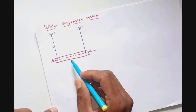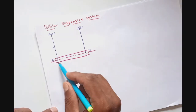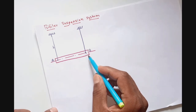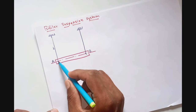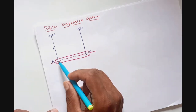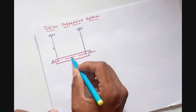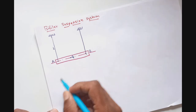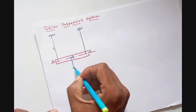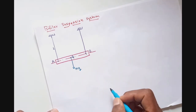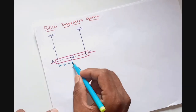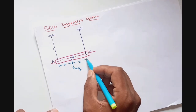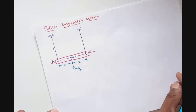Here I have shown one bifillar suspension system where a flat rectangular bar has been suspended in a vertical plane using two strings of equal length L. The strings are connected to the plate or bar at points A and B. The center of gravity G of this bar is the mass center through which the weight mg acts in the vertically downward direction. The mass center is located at distance X from the left string and at distance Y from the right string — these are the distances of CG from points of suspension A and B.